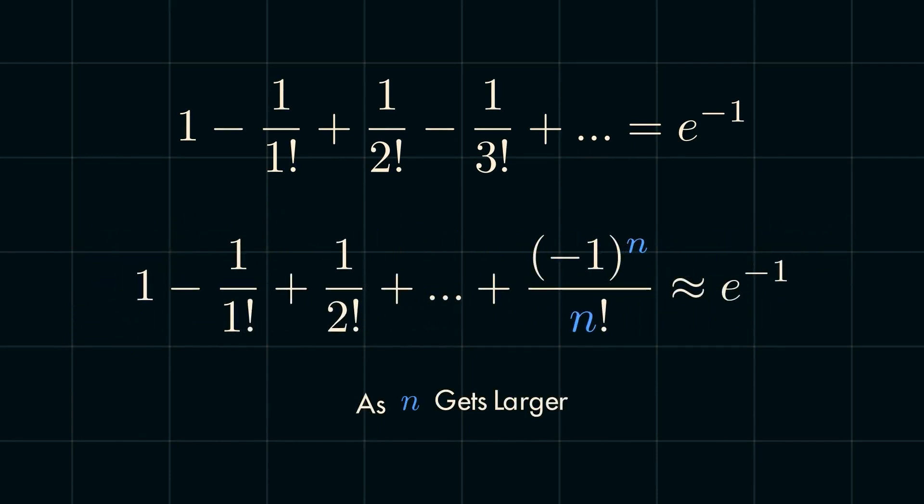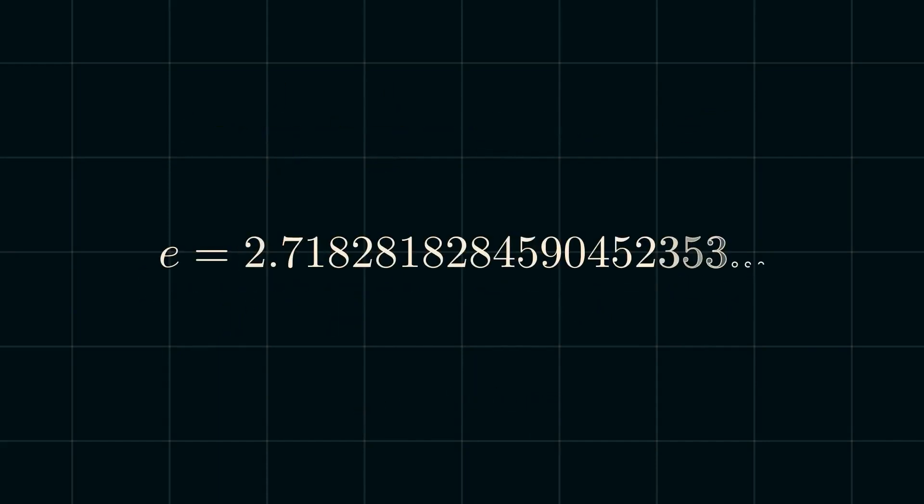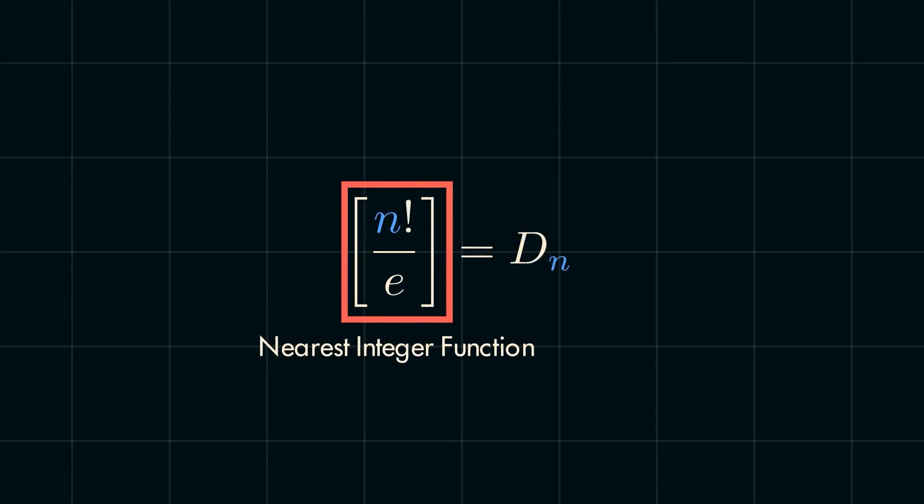I think that there's a real beauty in how such a seemingly random number, one that is certainly not an integer, can show up in a discrete problem like this. We can take this a step further by going back to the actual count of derangements by multiplying the probability by the n factorial we divided by, then rounding to the nearest integer, to give us an extremely elegant and surprising solution for finding the number of derangements. Frankly, that formula alone was enough to inspire me to make this whole video because of how interesting it is to see Euler's number in a solution to a discrete math problem.